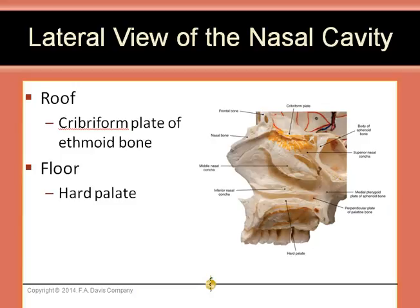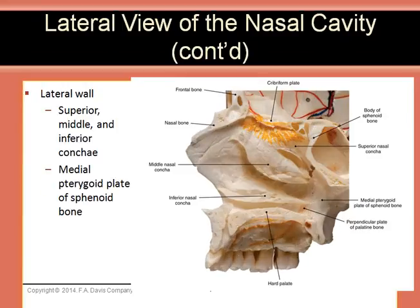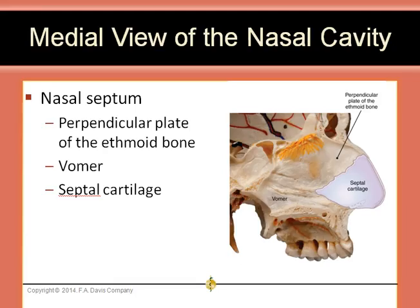The roof of the nasal cavity is made up of the cribriform plate of the ethmoid bone, and the floor is made up by the hard palate. The lateral wall of the nasal cavity contains the superior, middle, and inferior conchae, and the medial pterygoid plate of the sphenoid bone. The structures that form the nasal septum are the perpendicular plate of the ethmoid bone, the vomer, and the septal or nasal cartilage.